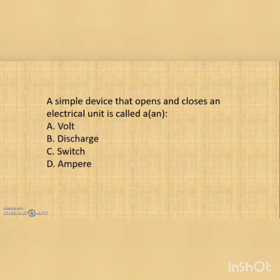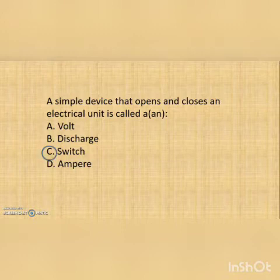The first question on your screen: A simple device that opens and closes an electrical unit is called an — options are: a volt, discharge, switch, or ampere. The correct option is switch.